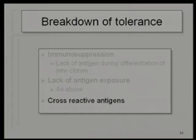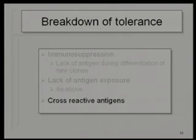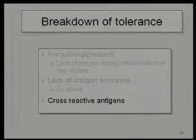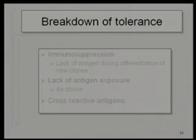These are antigenic mimicries — antigenic similarities between self and pathogens. This can lead to production of an immune response initially against the pathogen, but the products can react to the self-antigens. That is actually postulated as one of the mechanisms of autoimmune diseases, and there are many examples of that which we'll allude to when we talk about autoimmune diseases.